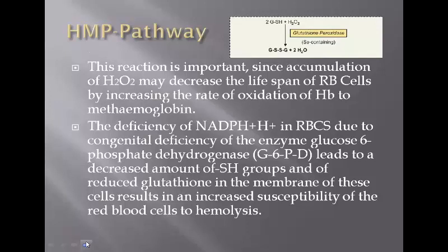Increased levels of peroxides in erythrocytes cause increased oxidation of hemoglobin to methemoglobin. In cases where NADPH formation is reduced due to a deficiency of enzyme glucose-6-phosphate dehydrogenase, the reduction of oxidized glutathione does not occur properly. This leads to decreased amounts of reduced glutathione, and the erythrocyte membranes become susceptible to hemolysis.